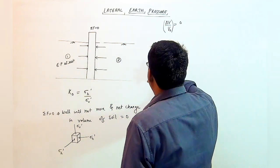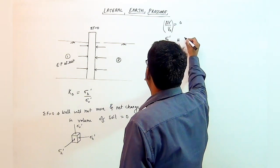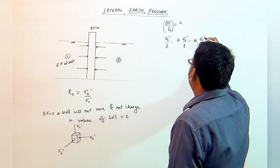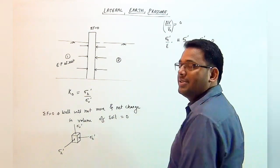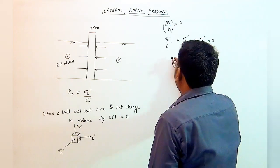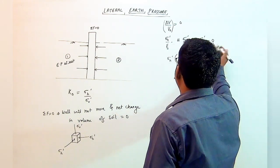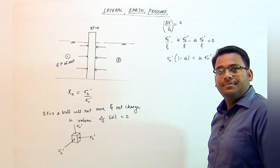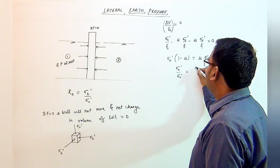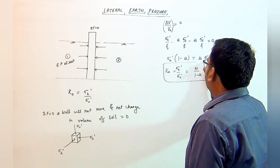And if the net volumetric strain is zero, we can directly write down the equation for volumetric strain. As we studied in Strength of Materials, it will be equal to sigma h dash upon E minus mu times sigma h dash upon E minus mu times sigma v dash upon E, all equal to zero. Taking E common and cancelling it out, we get sigma h dash into (1 minus mu) equals mu into sigma v dash. Hence, sigma h dash upon sigma v dash equals mu upon (1 minus mu), and this ratio is nothing but k0, where mu is Poisson's ratio.